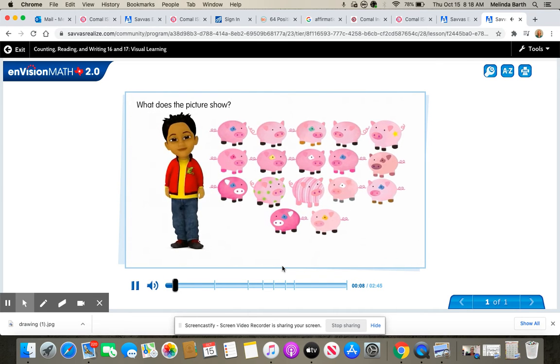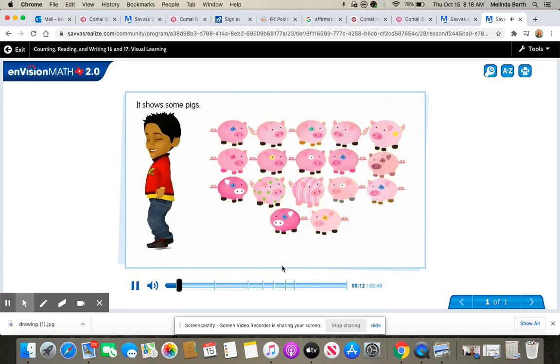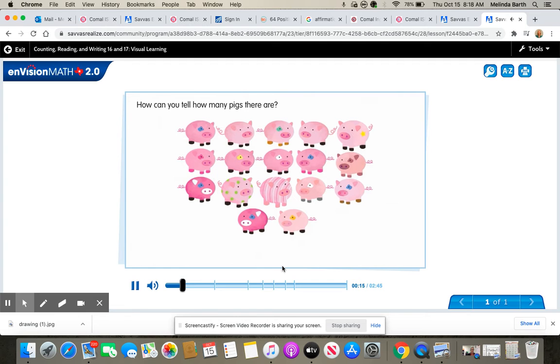What does the picture show? It shows some pigs. How can you tell how many pigs there are? You can count them. Let's count all the pigs: 1, 2, 3, 4, 5, 6, 7, 8, 9, 10, 11, 12, 13, 14, 15, 16, and 17. Why do you see a 17?